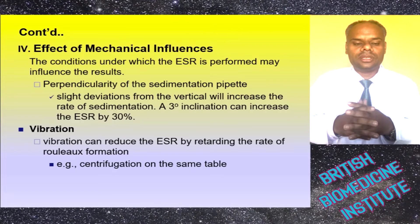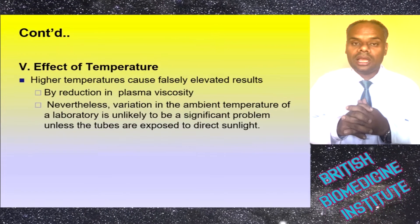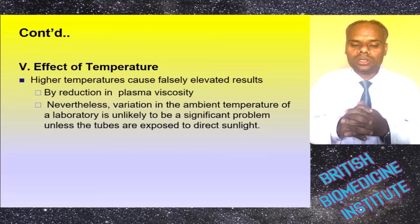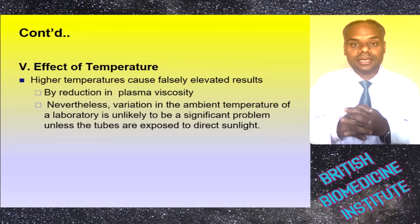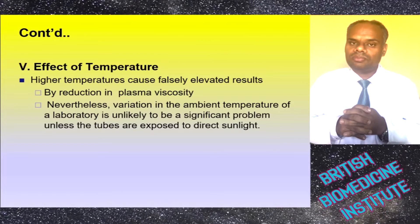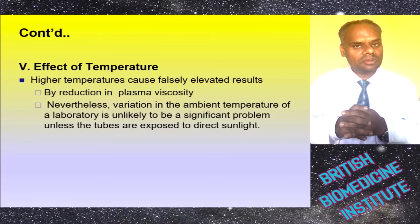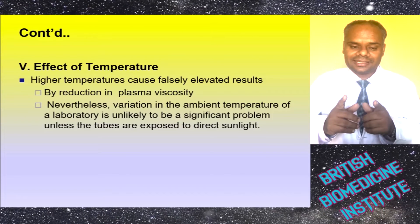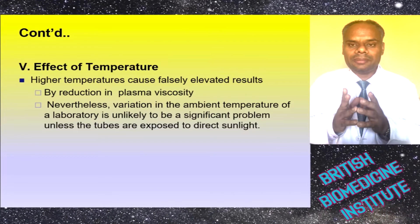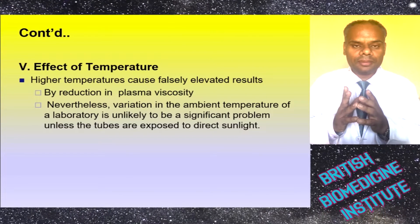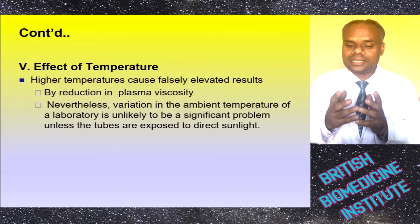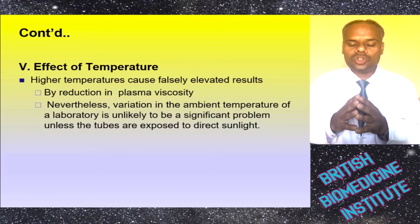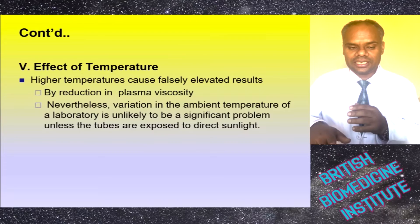The fifth factor is the effect of temperature. High temperature can falsely elevate results by reducing plasma viscosity. However, variation in the ambient temperature of the laboratory is unlikely to be a significant problem unless the tube is exposed to direct sunlight.